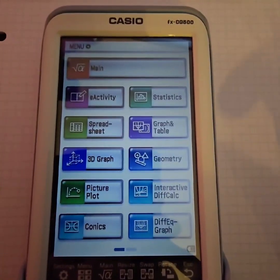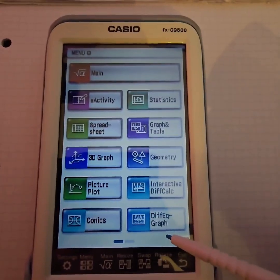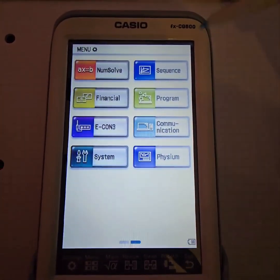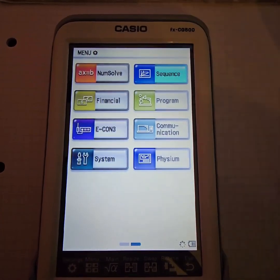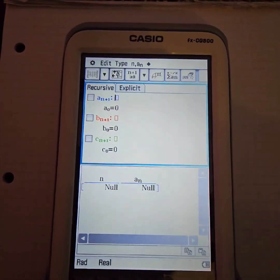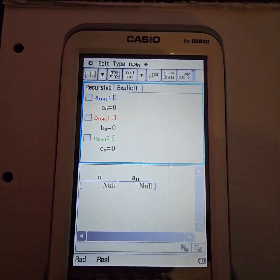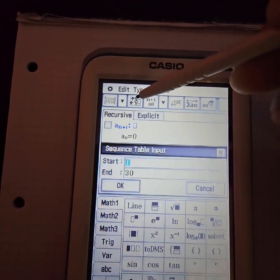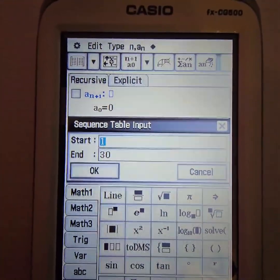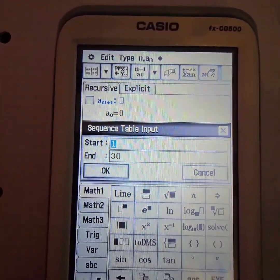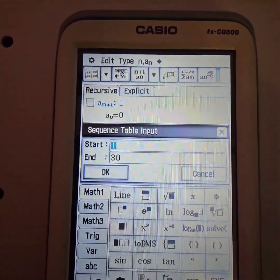At the moment I'm on the main menu and on this main menu I have to go to the right over here and I have to select sequence. The next step is I have to ensure that I want the first term to the 30th term so I click on XY over here and I make sure that the start is on 1 and I make sure that the end is on 30.